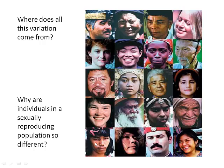We're going to look at where all the variation comes from — why individuals in a sexually reproducing population are so different. Humans all have the same 20,000 genes, that's what makes us human. But it's our slightly different versions of those genes, our different alleles, that makes us so different from one another.